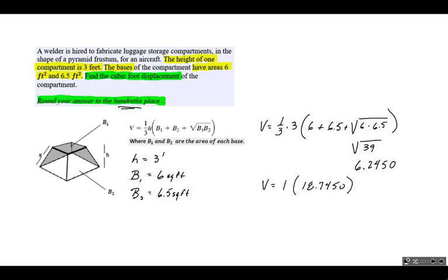We want to round to two decimal places, to the hundredths place. We look to the right and see that's five or greater, so we round to 18.75. That is the numeric value of our answer.